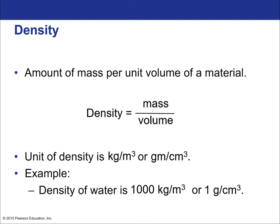Now let's get into a property of solids: density. A solid has a particular property called density, which is just mass per volume — kilograms per cubic meter. It can also be expressed in grams per cubic centimeter. Those two are not numerically equivalent but both are commonly used. For example, water has a density of 1000 kilograms per cubic meter, or 1 gram per cubic centimeter.